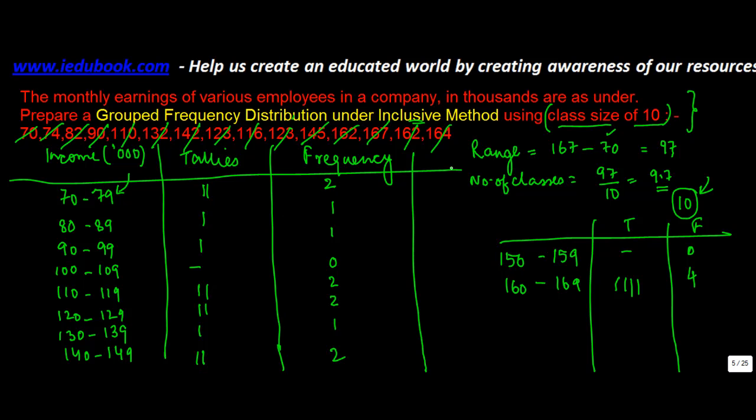So in the inclusive method, what I did was that I just took the last number. Instead of adding 10, which is the class size, to the starting number, I reduced one. Because if I would have added 10 to this, the last number would have to be excluded. So in an inclusive method, because I have to include the last number as well, we put this one less than that.